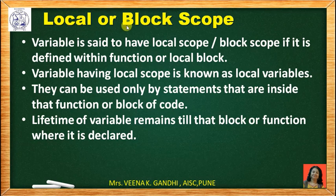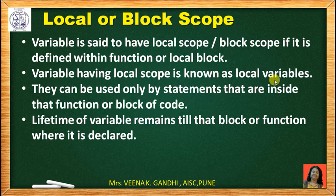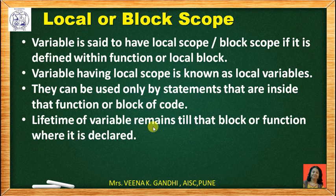What is local or block scope? A variable is said to have local scope or block scope if it is defined within a function or local block. A variable having local scope is known as a local variable — meaning if you define the variable inside a function or inside any opening and closing curly braces, it is called a block, and it is known as a local variable. Statements within that function or block can access that variable, and its lifetime remains till that block or function where it is declared.